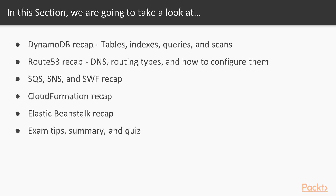In this section, we will cover DynamoDB Recap — tables, indexes, queries, and scans, as well as some other fundamental DynamoDB concepts. Route 53 Recap with DNS, routing types, and how to configure them. SQS, SNS, and SWF Recap. CloudFormation Recap. Elastic Beanstalk Recap. We will also introduce some exam tips, and we will have a summary and quiz to validate the knowledge.